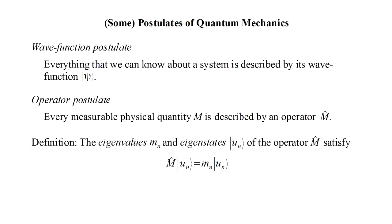We need the following definitions. The so-called eigenvalues m sub n and eigenstates u sub n of the operator m hat satisfy: m hat applied to the state u sub n produces m sub n times the same state.